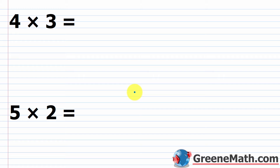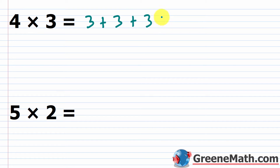Now let's build up to the rules for multiplying with negative numbers. We have four times three — from the multiplication tables, we know the answer is 12. Going back to earlier in the course, multiplication is a shortcut for repeated addition. So four times three can be written as three plus three plus three plus three, and three plus three is six, six plus three is nine, nine plus three is 12.